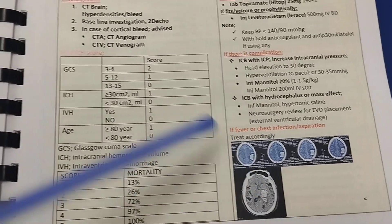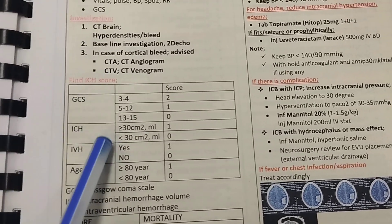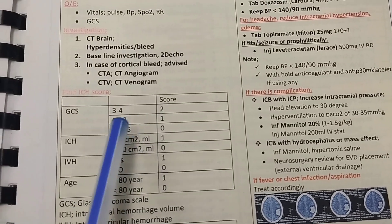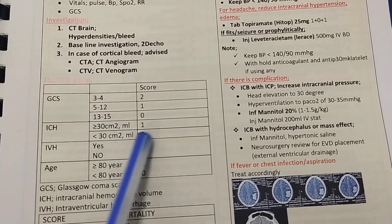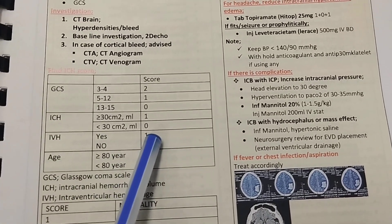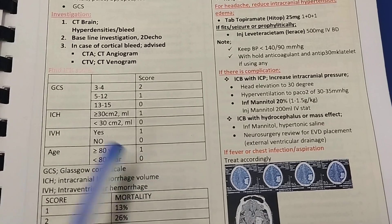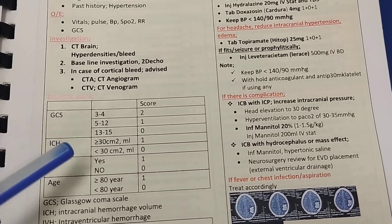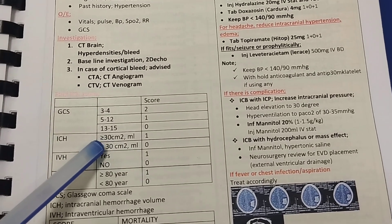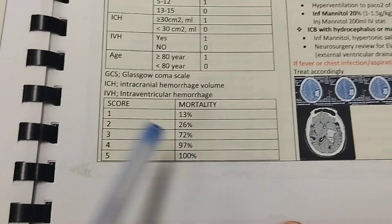The ICH score assesses mortality in intracranial bleed patients using four parameters: GCS, bleed volume, intraventricular hemorrhage, and age. GCS 3–4 scores 2 points; GCS 5–12 scores 1 point; GCS 13–15 scores 0. Bleed volume ≥30 ml scores 1; less than 30 ml scores 0. Presence of intraventricular hemorrhage scores 1; absence scores 0. Age ≥80 years scores 1. For this patient: GCS score was 2, bleed was more than 30 ml scoring 1, and intraventricular extension was present scoring 1 — giving a total ICH score of 4, with a mortality of 97 percent.